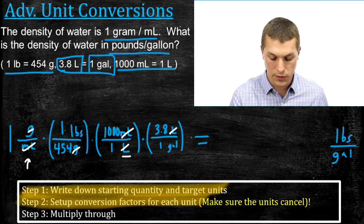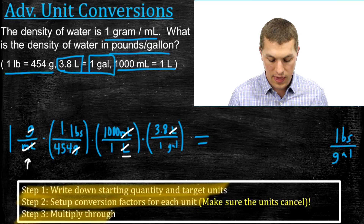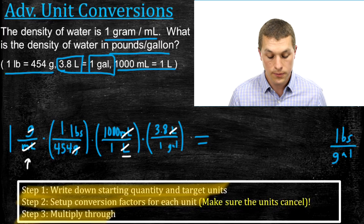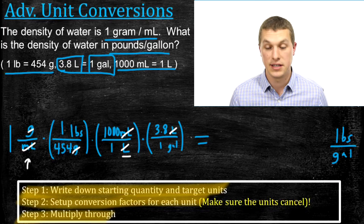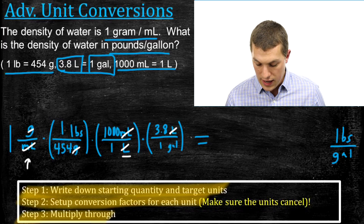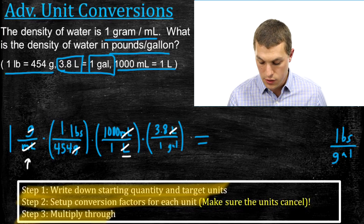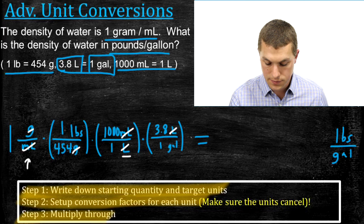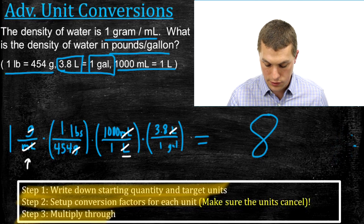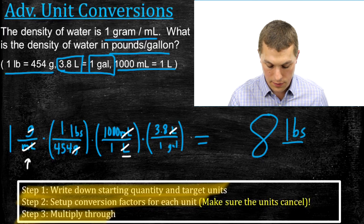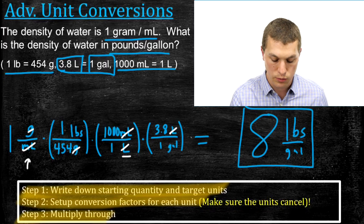Step three: multiply through. We take one (our starting quantity), divide by 454, multiply by 1,000, and then multiply by 3.8 to go through all our conversion factors. After taking sig figs into account, we get 8 pounds per gallon. So water weighs about 8 pounds per gallon, which you may have heard.